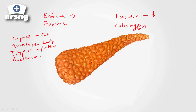Insulin helps to lower blood sugars by allowing blood sugar into the cell. Glucagon actually helps to raise blood sugar. You can see very simply and quickly here how important the pancreas is — it's a very small organ that is incredibly important to the function of the body overall.